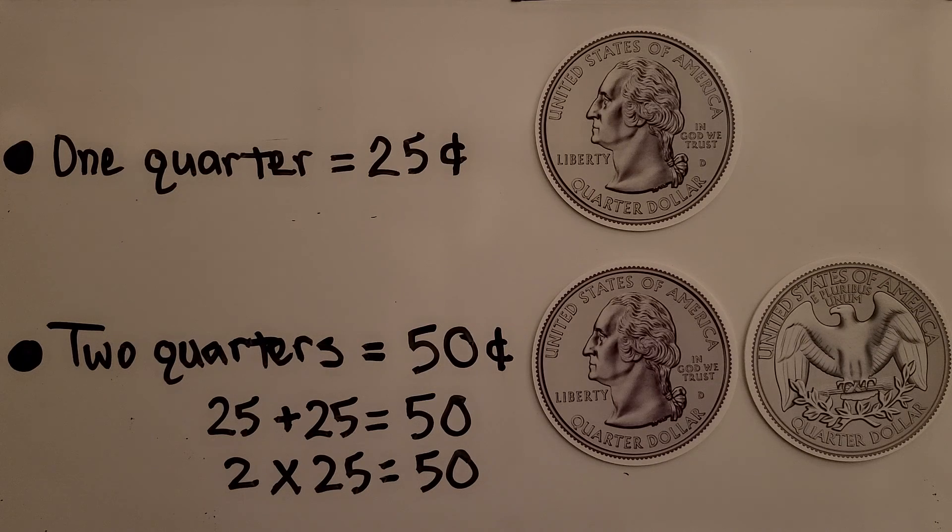One quarter, 25 cents. That's 25. Two quarters, that's 50 cents. That's 50. We do 25 plus 25, it's equal to 50. Two times 25 is equal to 50.